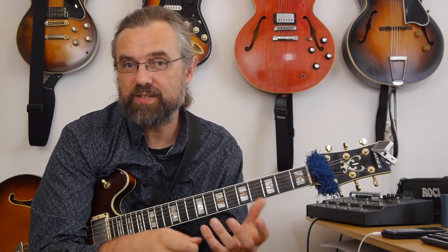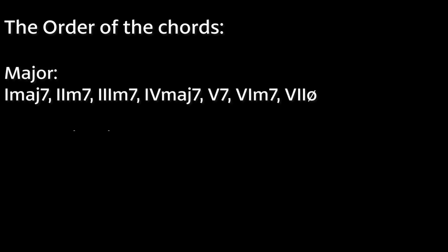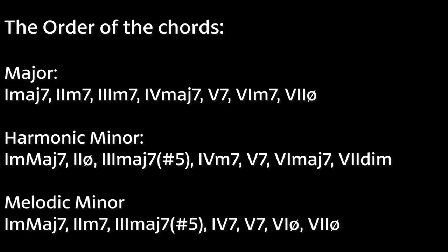What you wanna learn here is that for each of the different scales you need to know, you need to know the order of the chords. You need to know that if it's a major scale, the first chord is major seven, the second is a minor seven, the third is a minor seven, and so on. You need to know that for a harmonic minor scale, the seventh degree is a diminished chord, and for the melodic minor scale, the sixth degree is a minor seven flat five chord. Those kinds of things are essential to know.